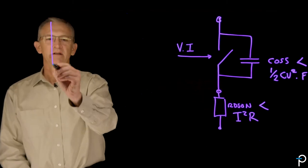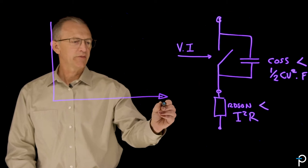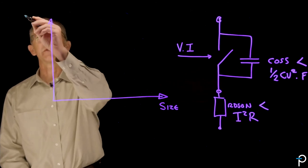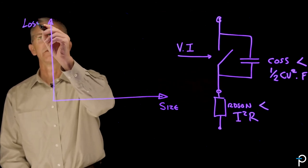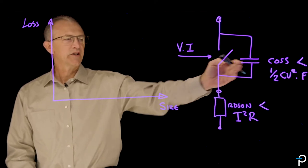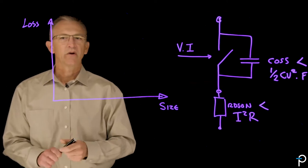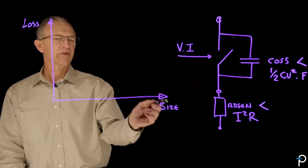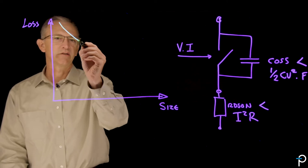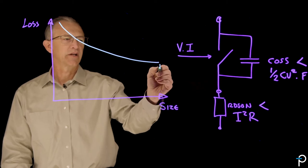This is an axis. It's a little bit of a constructed axis but I'm going to put physical size on the x-axis and I'm going to put losses on the y-axis. Looking at RDS on and COSS for a standard MOSFET you're going to have the losses with size are going to go down when they're related to RDS on. So these are your RDS on losses. As a transistor gets bigger the losses get smaller.